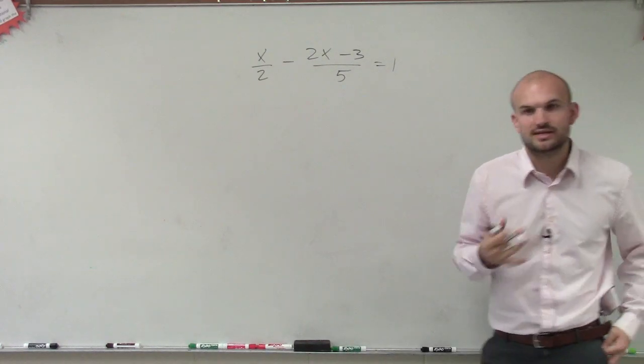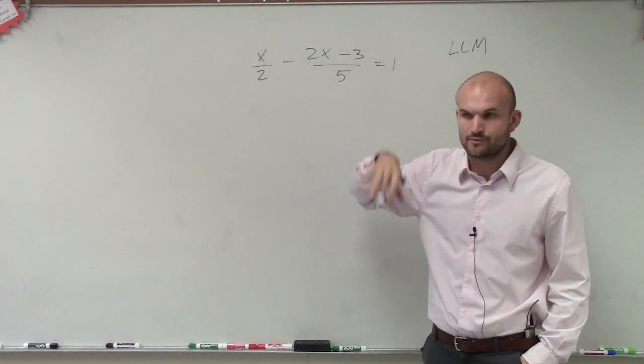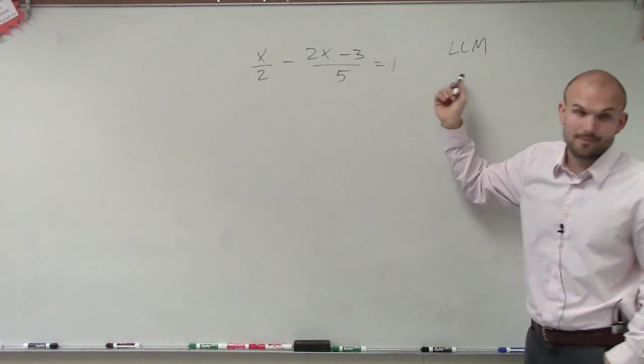So to get rid of our fractions, the first thing I always do is determine my least common multiple for my denominators, or your LCD, whichever way you want to go through it. But the least common multiple of my denominators...